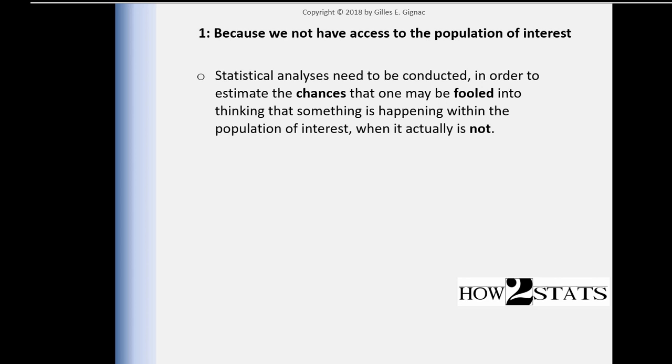That's a big part of inferential statistics: calculating that chance. What are the chances that I'm fooling myself and other people into thinking that there is something going on in the world that I'm predicting, or that there's a difference between groups, when really there's nothing?